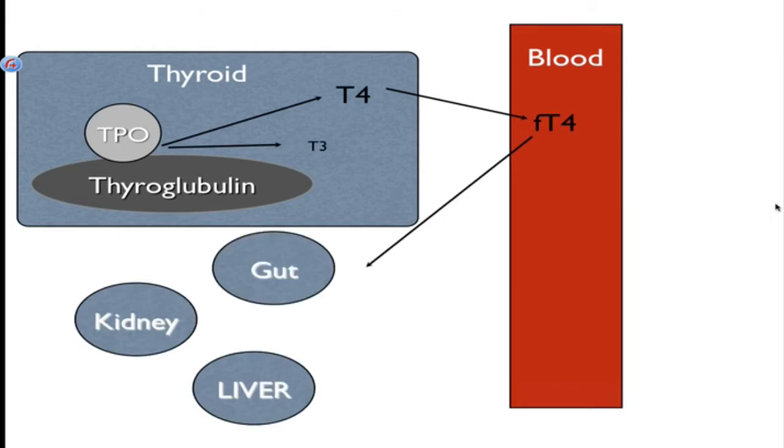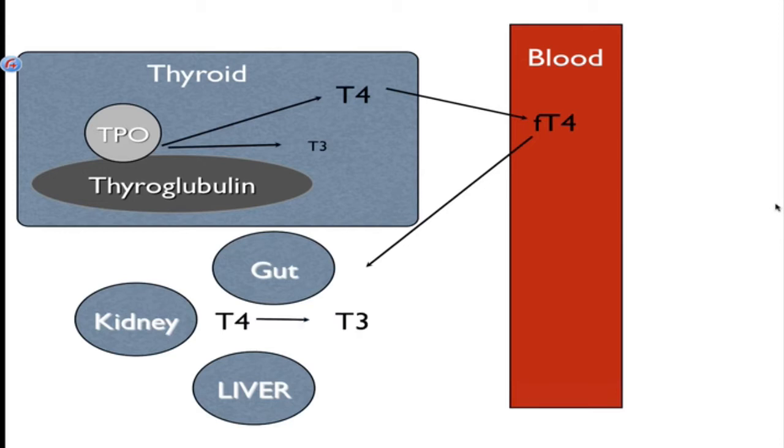Then free T4 goes into different organ tissue, so it flows through the blood, it passes through the kidney, it passes through the liver, it passes through the gut, and that's where the conversion from T4 to T3 happens. That's where that conversion happens, mostly in the kidney and liver, but about 20% happens in the digestive tract as well.